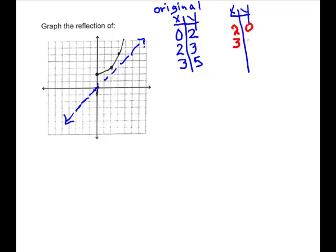So the switched pairs will be (2, 0), (3, 2), and (5, 3). We plot (2, 0), (3, 2), and (5, 3), and then we connect those. This edge goes about right there. And you can see it flips across the line y equals x.